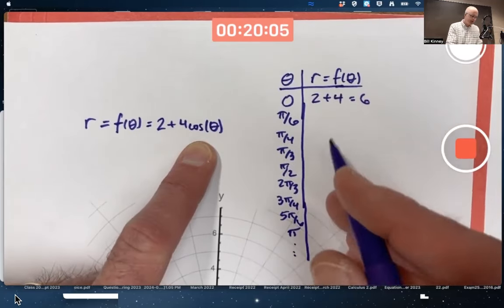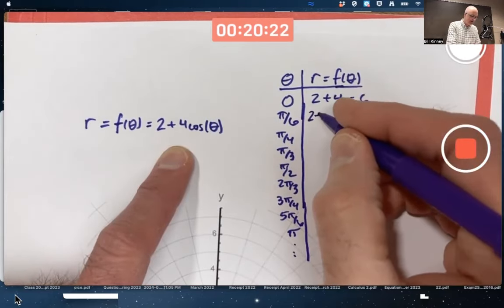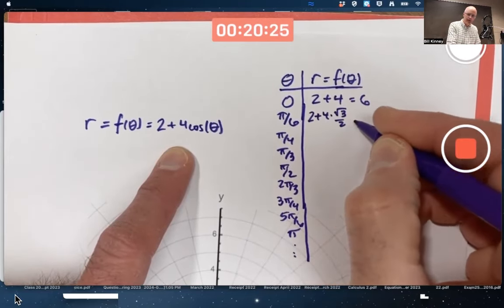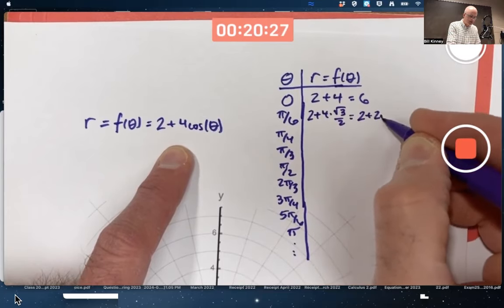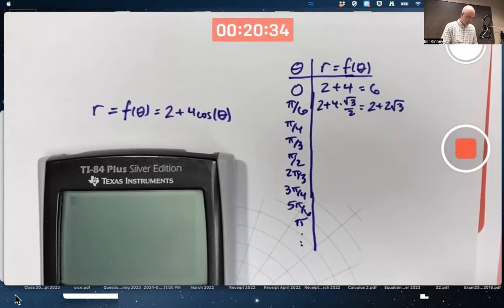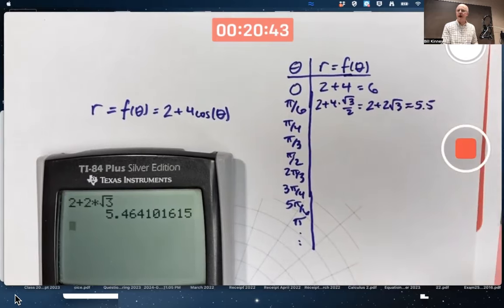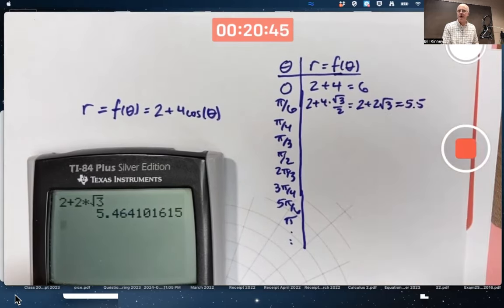When the angle is pi over 6 radians, 30 degrees, you move up the unit circle a little bit. Cosine of the first coordinate of that point, it's a little less than 1. The famous value is square root of 3 over 2. This is 2 plus 4 times square root of 3 over 2, which simplifies to 2 plus 2 times square root of 3. What is that? 2 plus 2 times square root of 3, about 5.5. I'll just round to 1 place after the decimal, since I'm trying to get just a rough graph.